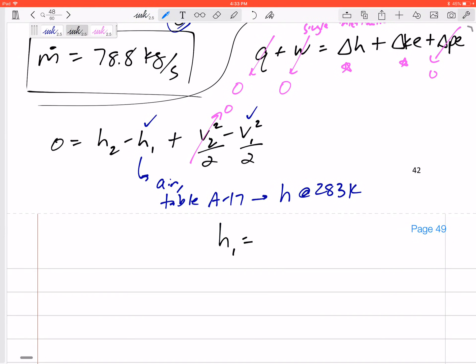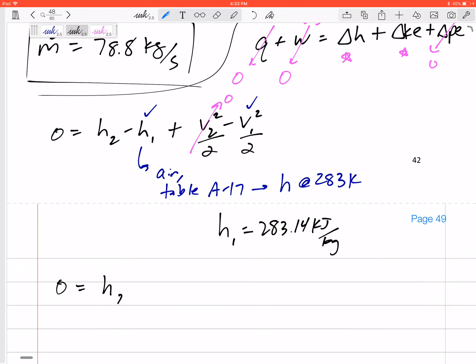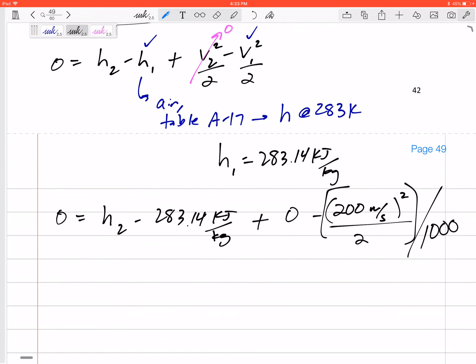All right, so this is what I've got: I've got an h value of 283.14 kilojoules per kilogram. So here's my question: 0 = h2 - 283.14 kJ/kg plus, let's be careful, 0 - 200 meters per second squared over 2. But this would just be joules per kilogram. This would just be joules per kilogram. Let me divide it by a thousand to get it into the same units, kilojoules per kilogram. And so then I can just solve for h. I would get h is 303.14 kilojoules per kilogram.